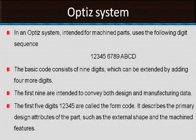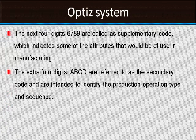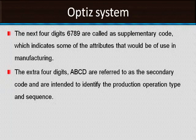The form code describes attributes such as whether the part is rotational or prismatic, whether it has external grooves, or other external shape elements. The next 4 digits (6–9) are called the supplementary code, which indicates attributes used in manufacturing. The final 4 digits (A, B, C, D) are the secondary code, intended to describe manufacturing production operation type and sequence. The manufacturer can also embed their own data in these A, B, C, D digits.